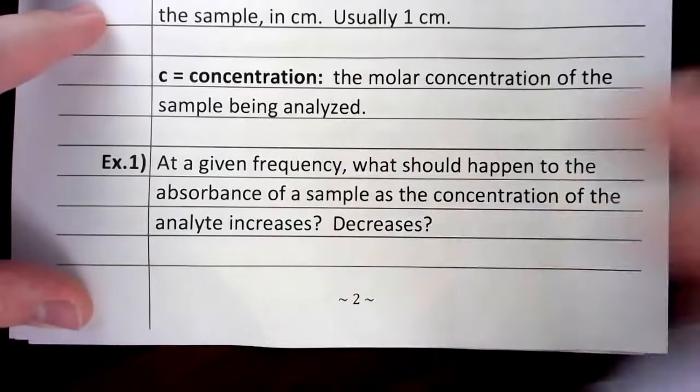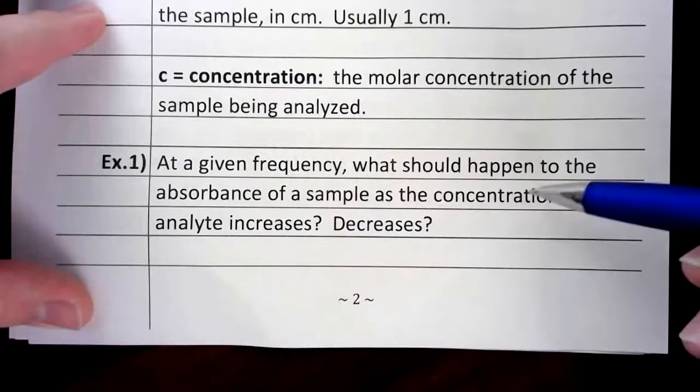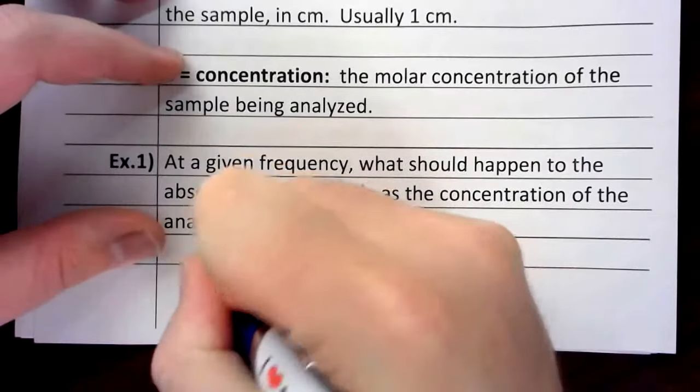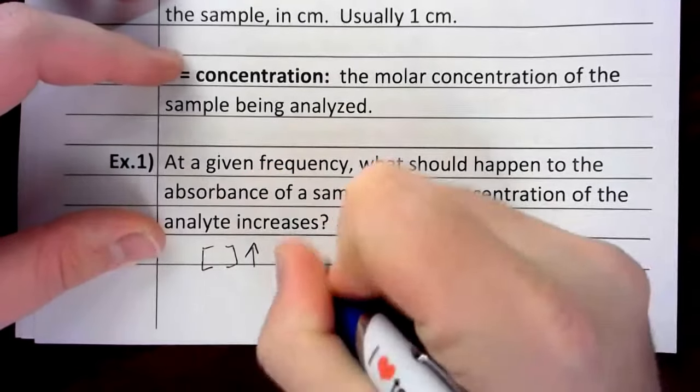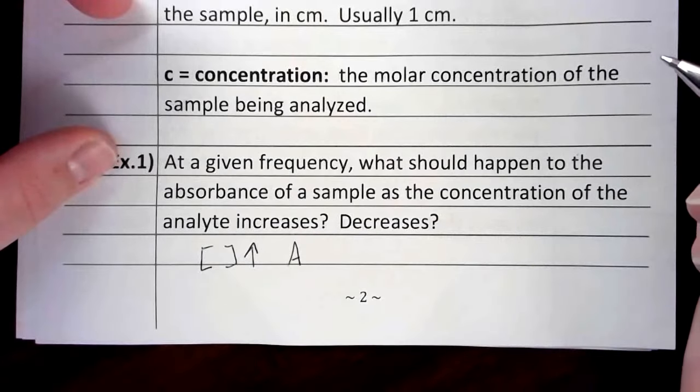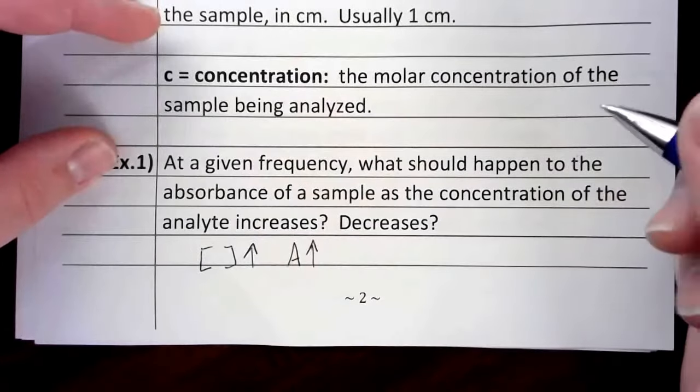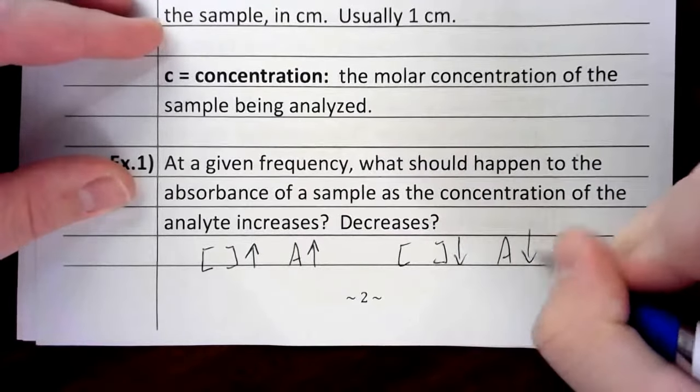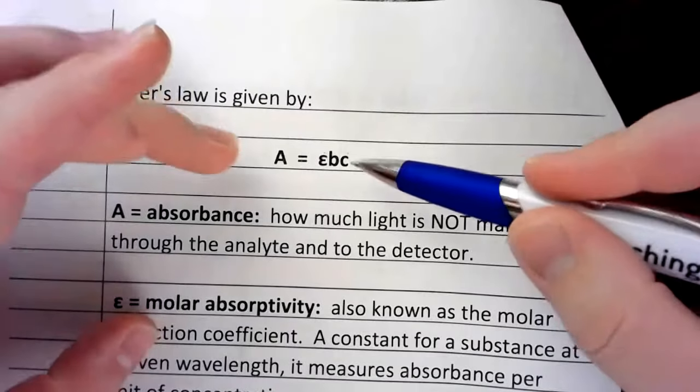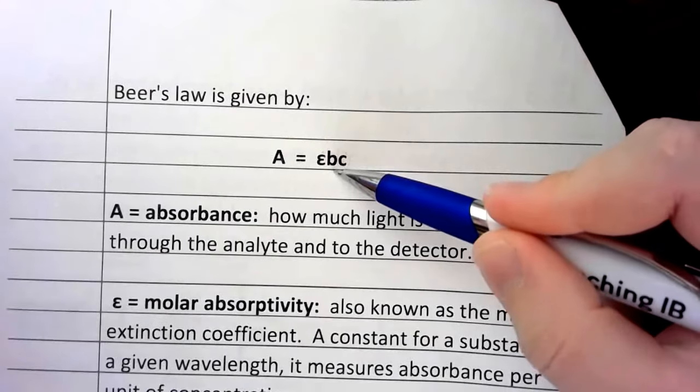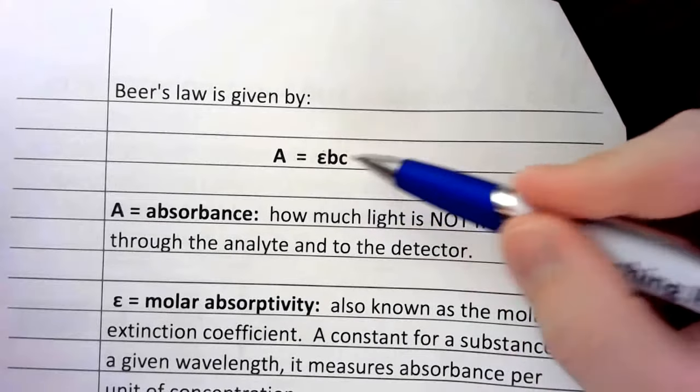So let's play around with this a little bit. At a given frequency, what should happen as the concentration increases? Well, if there's more stuff in the cuvette, we assume that there'll be more absorbance. And then the opposite would also be true. If concentration goes down, we expect absorbance to also go down. This equation describes a direct relationship between A and c because ε and b, epsilon and b, are both constants. So this is just going to work out to be some number. If c goes up, so does A.